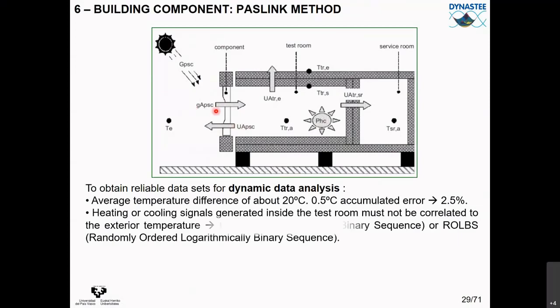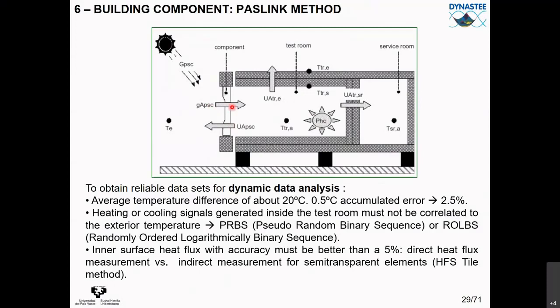You can measure exterior temperature, interior temperature, produce a heating input to create a temperature difference, measure solar radiation, and measure all heat flow through all walls except the component being characterized. We want to obtain the UA value and solar aperture of this component. The idea is to produce a large temperature difference between interior and exterior — once we have a big temperature difference, the error in that measurement is small. We produce a heating signal with specific characteristics to make parameter identification of UA and solar aperture easier.